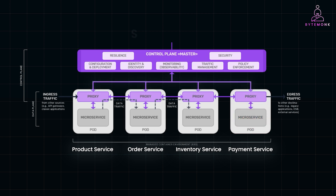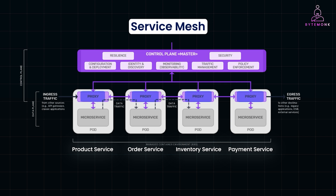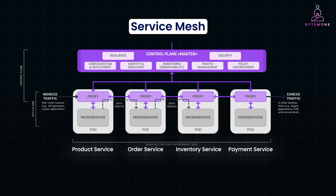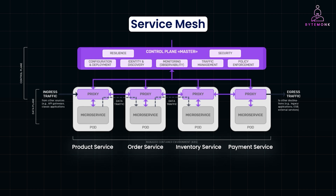And that is where service mesh steps in. The sidecar proxies deployed with each service will handle retries if the payment service is unresponsive, so other services aren't affected. The traffic between services is encrypted, ensuring no sensitive data is exposed. And rolling out a new version of the order service can be done with canary deployments, where the sidecar proxy routes a small percentage of traffic to the new version before it is fully rolled out. This allows you to manage the complexity without hard-coding these behaviors into each service.